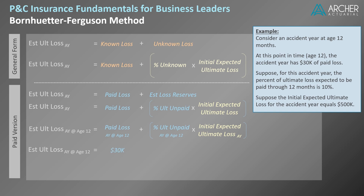Substituting values, our estimate of ultimate loss equals $30,000 in paid loss, plus the following quantity: 90% times $500,000. The 90% is the percent of ultimate unpaid based on our development pattern — since the percent expected to be paid through 12 months is 10%, the percent expected to be unpaid is 1 minus 10%, or 90%. When we do the math, we get $30,000 plus an estimate for loss reserves of $450,000, for a combined estimate of ultimate loss of $480,000.